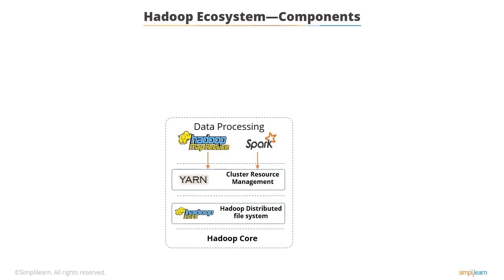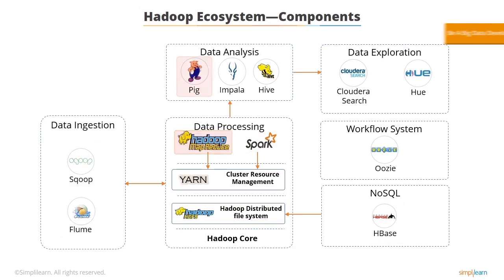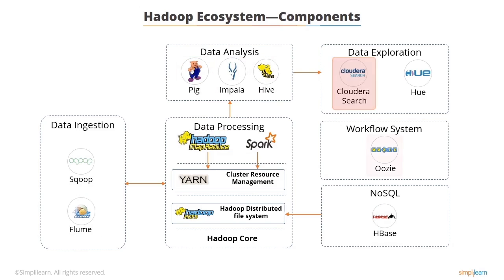The Hadoop Ecosystem is continuously growing to meet the needs of big data. Let's understand the role of each component of the Hadoop Ecosystem. It's comprised of the following 12 components: Hadoop Distributed File System, HBase, Sqoop, Flume, Spark, Hadoop MapReduce, Pig, Impala, Hive, Cloudera Search, Oozie, and Hue. You will learn about the role of each component in the next screens.